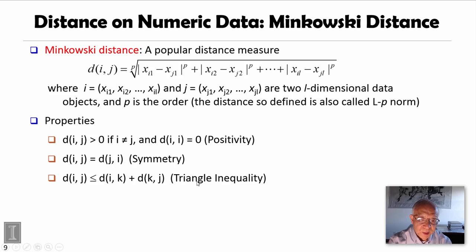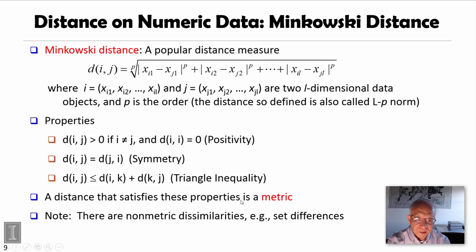Then the third one, called triangular inequality, means for the distance between i and j, if you go through k, that means you go first to k, then from k to j. That distance should be no less than directly going from i to j. The distance measure that satisfies these three properties is called metric distance. Notice not all distances are metric. For example, set distance is not metric. In this lecture, we mainly discuss metric distance.